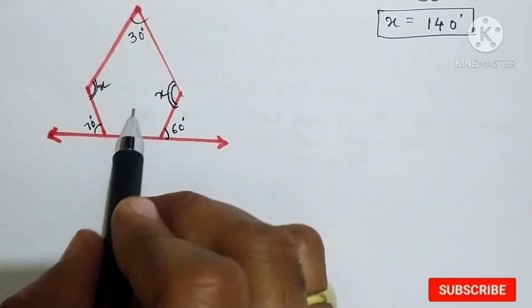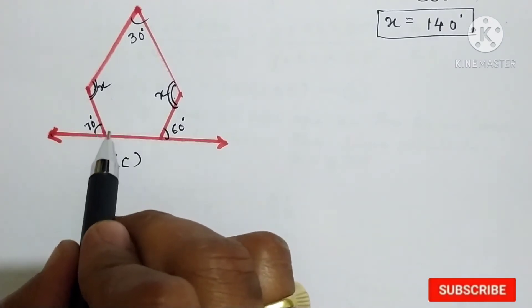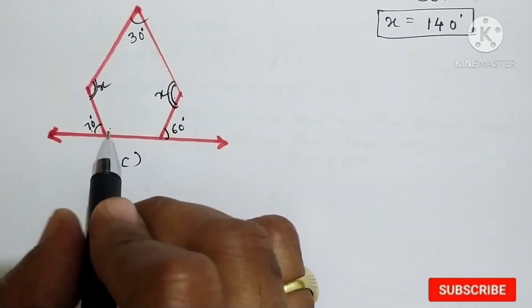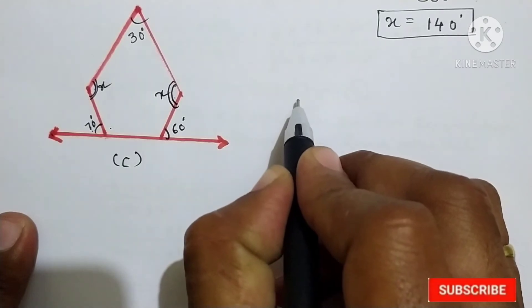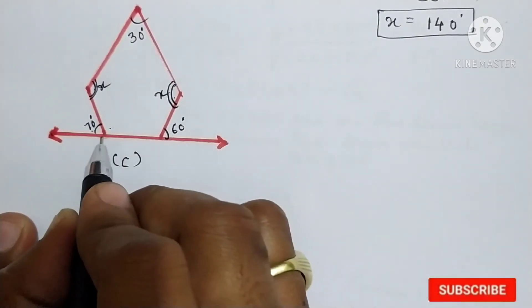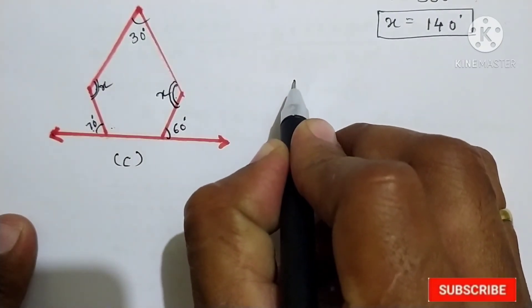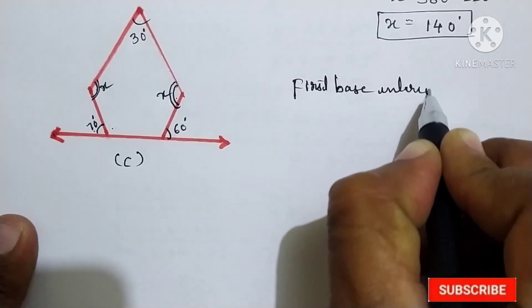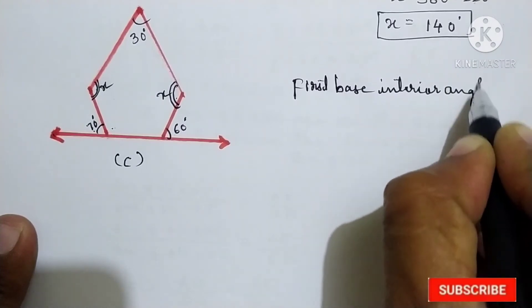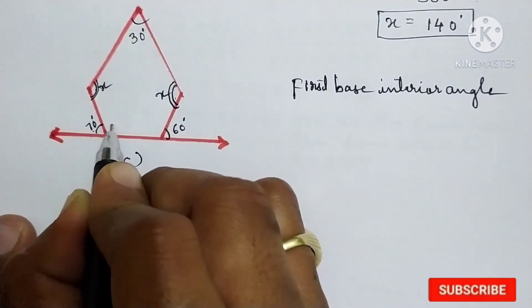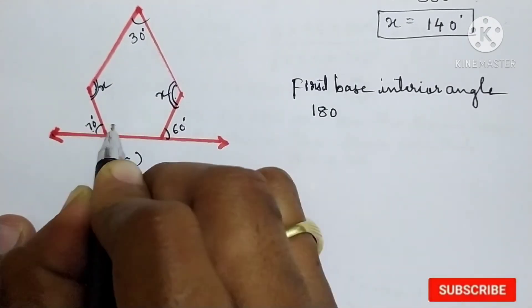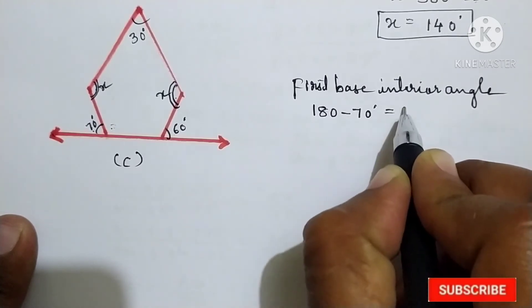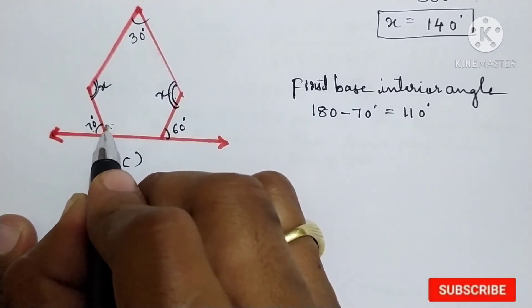First, what we should do here? We can use the linear pair — the sum of these two angles is equal to 180 degrees. So the first base interior angle: 180 degrees minus 70 degrees is given, so this is equal to 110 degrees. This angle becomes 110 degrees.